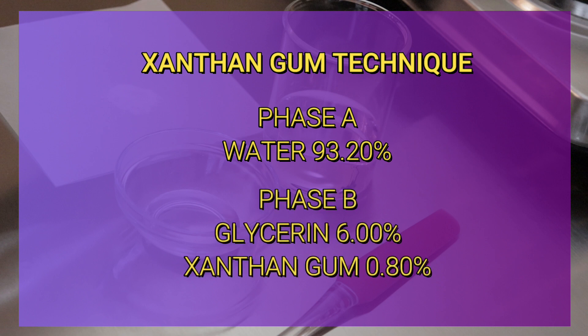And I am using water, glycerin as my humectant, and xanthan gum as my rheology modifier. Now if you don't have glycerin, you can substitute it for propanediol or propylene glycol.